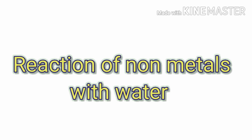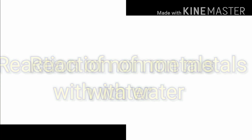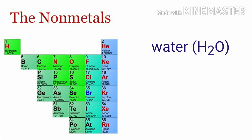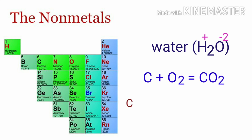The reaction of nonmetals with water. Nonmetals are electronegative and are unable to break the bond between H and O in water. The nonmetals cannot reduce hydrogen by donating electrons. Thus nonmetals do not react with water. Carbon burns in air to form carbon dioxide, and this carbon dioxide then reacts with water to form carbonic acid. So the nonmetals don't react directly with water.